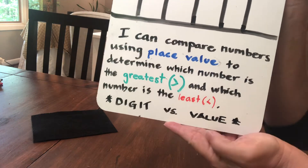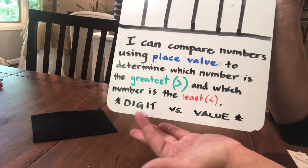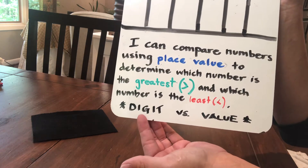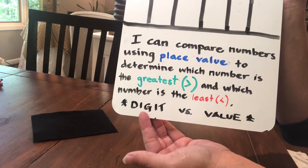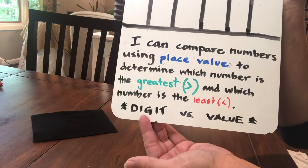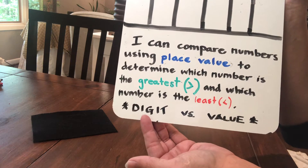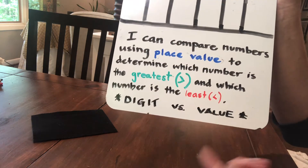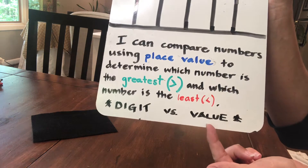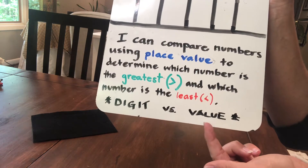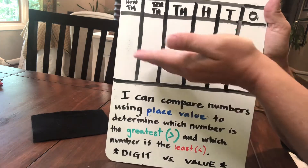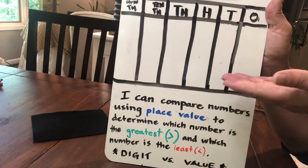Do you remember that from a previous lesson? A digit is simply a number. We see it with our eyes; it's a symbol, it represents something. A digit is just a number, but digits have value depending on where they fall in the place value chart.